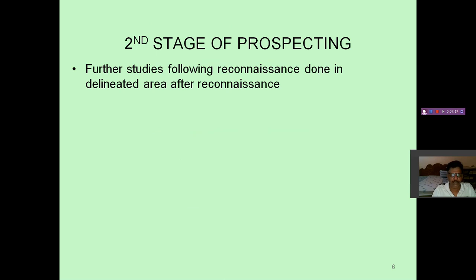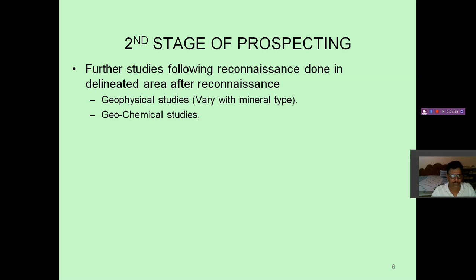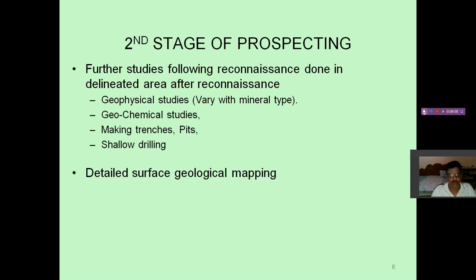Coming to the second stage of prospecting — further studies are done after reconnaissance in the delineated area. Delineated area means from reconnaissance you get an approximate idea that out of 200 square kilometers, this 5 square kilometers looks to be better — based on samples found, stream sediment traces, or pitting and trenching values. You will be reducing the area and doing further work like geophysical studies, geochemical studies, making trenches and pits, shallow drilling, and detailed geological mapping. All these things — chemical studies, physical and trenches — we will be learning in the coming lectures.